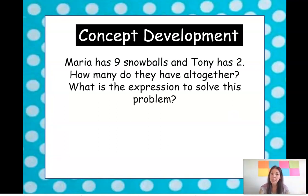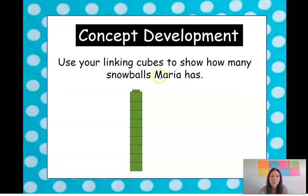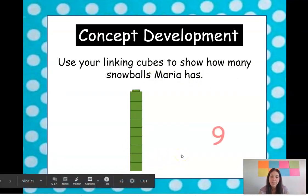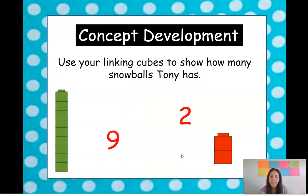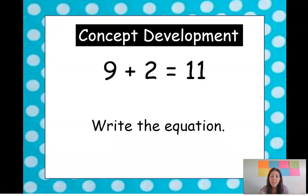This time Maria has nine snowballs and Tony has two. How many do they have all together? What is the expression to solve this problem? We are going to say we have nine plus two. Remember, we're adding because we're taking two groups and putting them together. So nine plus two. We have nine here and we have two over here. Our equation is nine plus two equals 11.